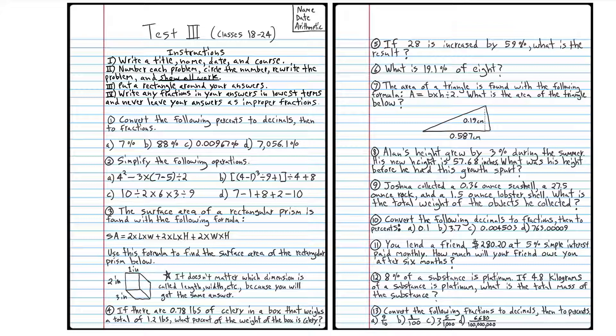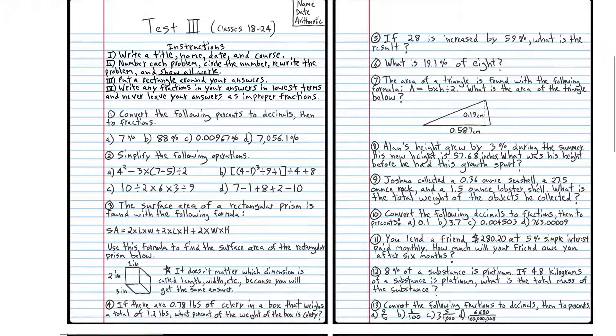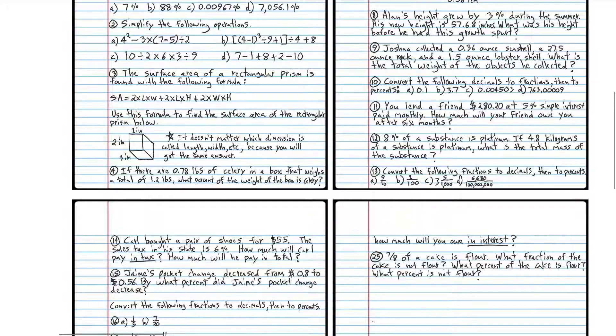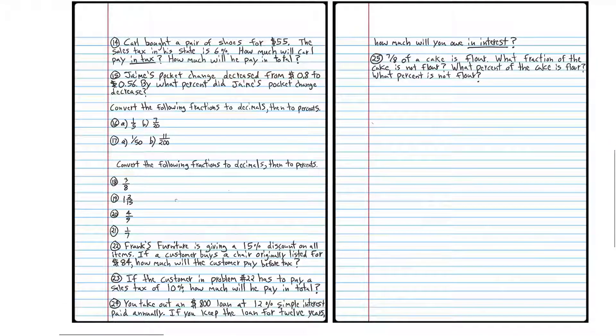As usual, there's 25 problems, and each problem is worth 4 points for a total of 100 points. So get a screenshot of this page. And get a screenshot of this page, or these pages.